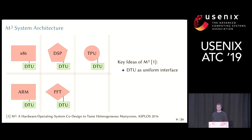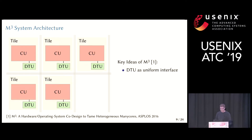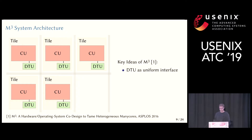The uniform interface in M3 is provided by the so-called Data Transfer Unit, the DTU, which sits next to each compute unit and allows these compute units to interact with each other, for example using message passing. With this uniform interface, we can forget about the differences among compute units and just call them CUs. We have a bunch of tiles integrated with some interconnect, and in each tile there is a compute unit and a DTU.